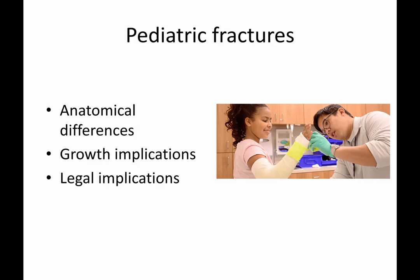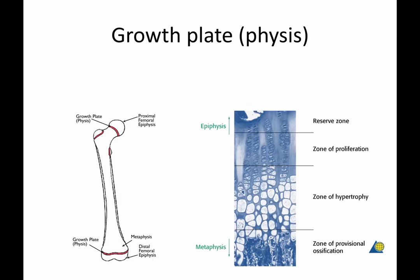There are growth implications which you don't have in an adult. When you're addressing a fracture in a child, that is a bone that is typically going to continue growing, depending on their age. That has implications with remodeling — younger children typically remodel a lot more, so a fracture can have a little more deformity and still remodel and straighten itself out, whereas an adolescent may not have much growth remaining. There are also legal implications: you may be dealing with children with injuries caused by non-accidental trauma.